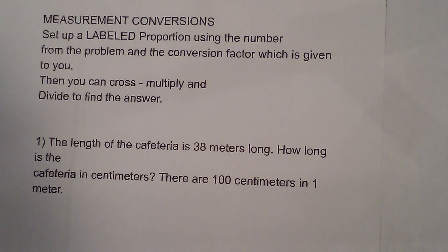First you set up a labeled proportion using the number from the problem and the conversion factor which is given to you. Then you cross multiply and divide.